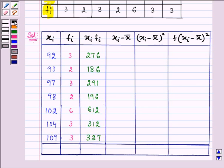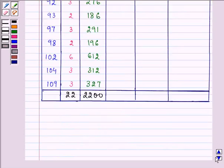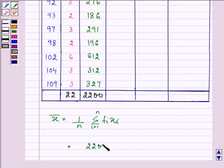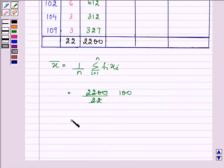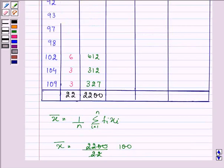Now finding out the sum, the sum is coming out to be 2200 and finding the sum of fi, we have 22. So before proceeding on to the next step since we need to find the value of mean and then only we can proceed on with the next step, let us find out the mean. So we have mean is equal to 1 upon n summation fi*xi where i is equal to 1 till n. And that is on substituting the value 2200 divided by 22 giving us the answer on simplification as 100. So we have mean is equal to 100. Now let us proceed on with the next step.